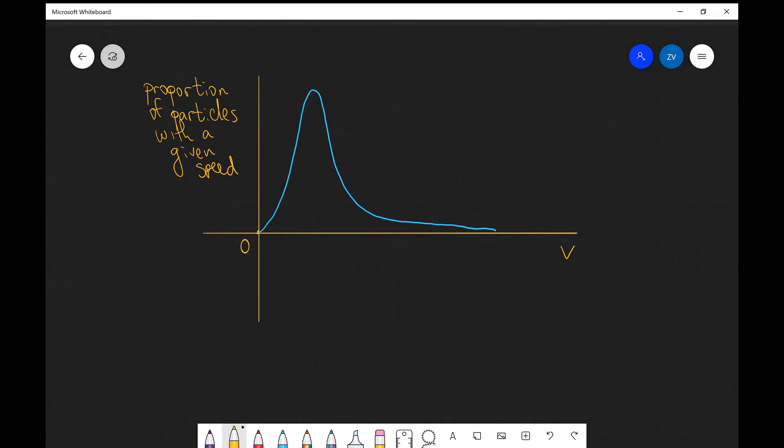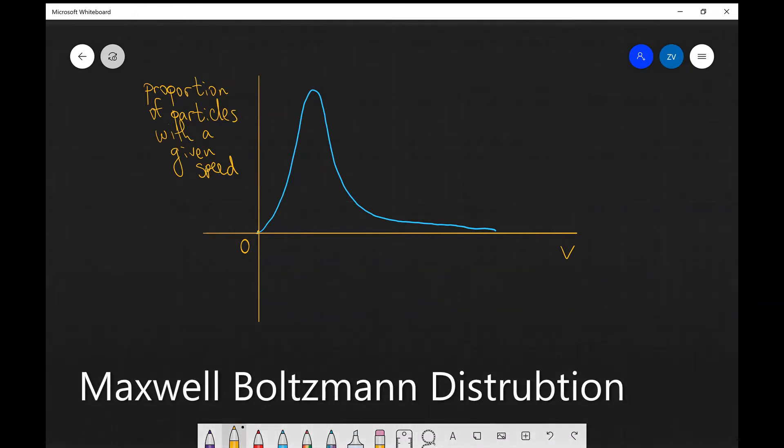What we're going to be looking at today is the Maxwell-Boltzmann distribution. This is essentially a function of the proportion of particles with a given speed plotted against the actual speed of the particles for an ideal gas.